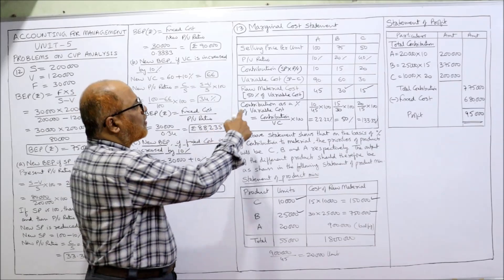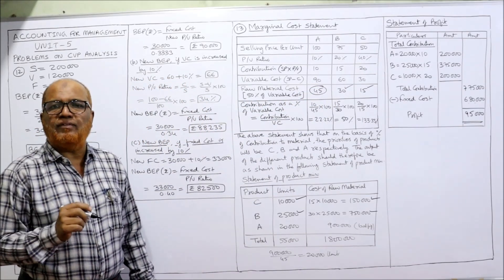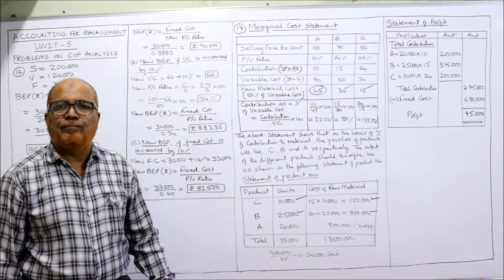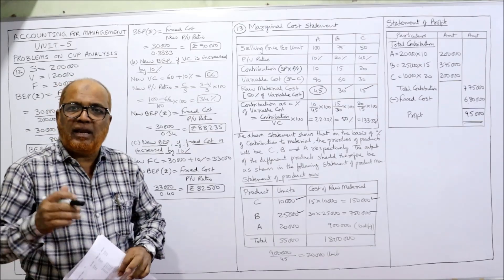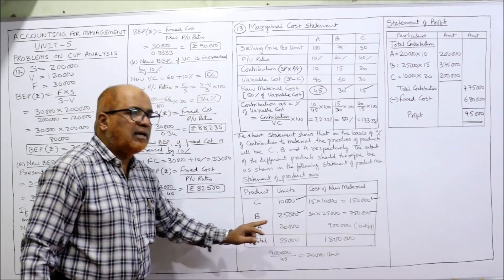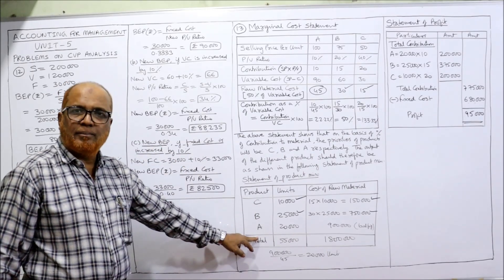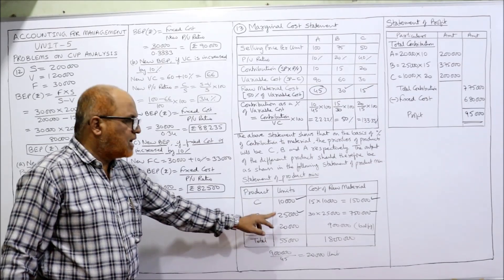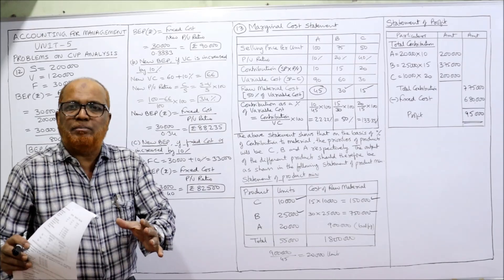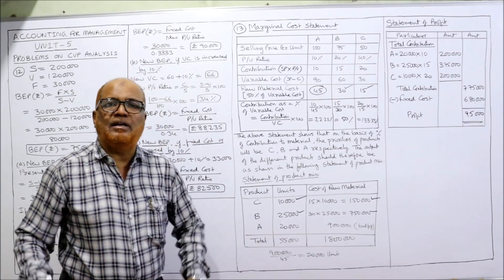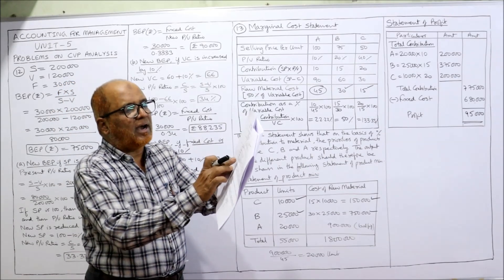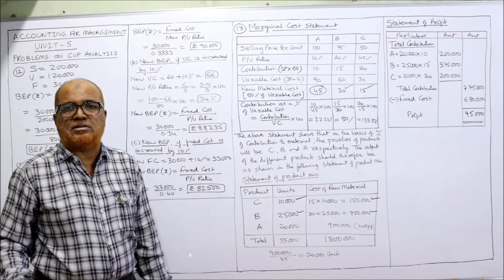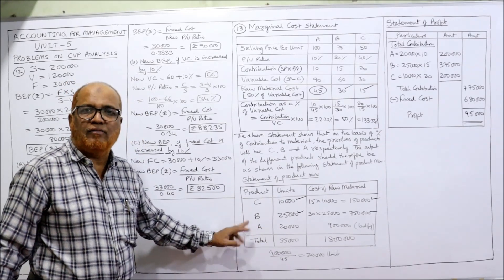So the optimal product mix is: A = 20,000 units, B = 25,000 units, C = 10,000 units. This fully utilizes all 18,00,000 rupees of raw material. Although the maximum demand for A is 40,000 units, we can only produce 20,000 due to the raw material shortage. This completes the first part of problem 13.